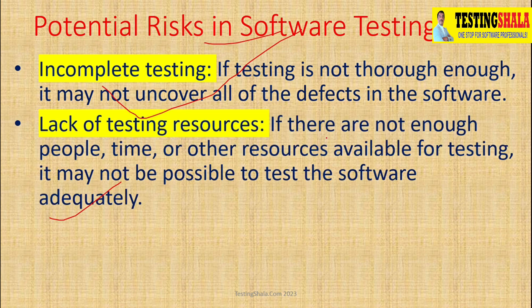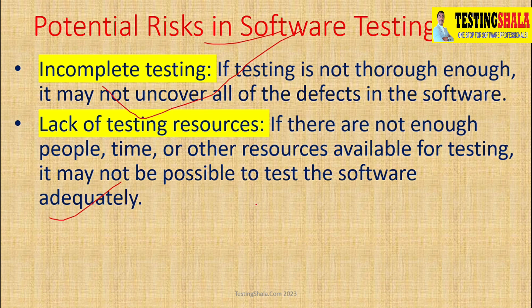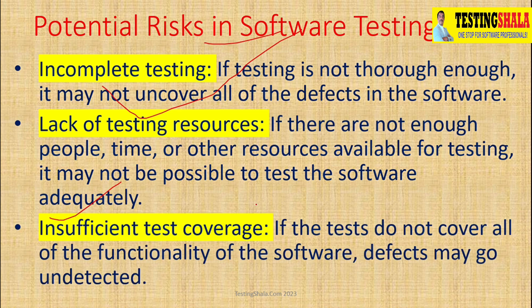The next one is lack of testing resources, especially in terms of tester availability and other resources. Other resources could be hardware resources and software resources, which are also very much required. If you are not getting enough of these resources on time, then the risk becomes very high. We should plan in a well-planned manner and keep escalating to various stakeholders so that we can mitigate this risk.